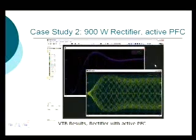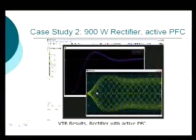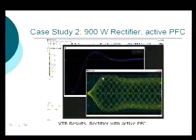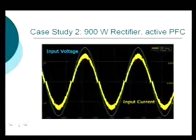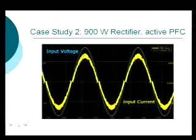Looking at the input quantities, the cyan is the input voltage and the yellow is the input current. You can see it has some envelope related to startup, but at every instant it looks sinusoidal. Zooming in on the input current and comparing it to the input current with no power factor correction, you can see it's very sinusoidal, and it appears to be pretty much in phase as well.